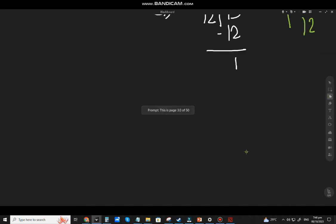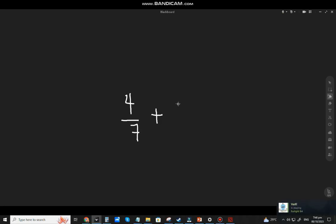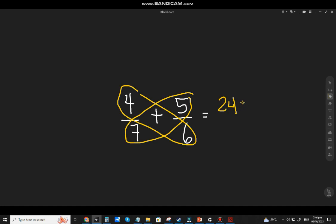So let's have the last example. What if the question is like this? Let's see. 4 over 7 and plus that in 5 over 6. So let's do the butterfly method. 4 times 6 is 24. 5 times 7 is 35. And 7 times 6 is 42.